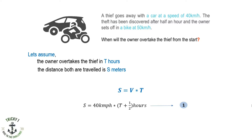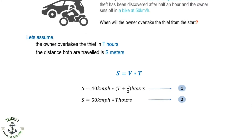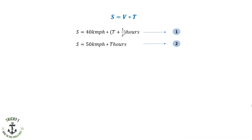The thief's total time is t plus one-half, because the owner starts half an hour late. For the owner, the distance traveled s equals 50 km per hour into t hours. Since both distances are equal, we equate the two equations: 40 km/h × (t + 1/2) = 50 km/h × t.